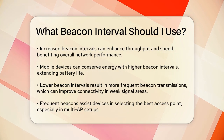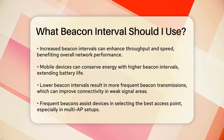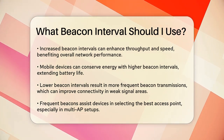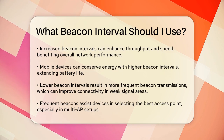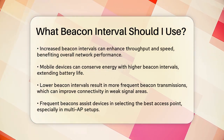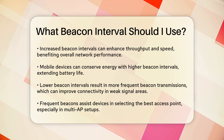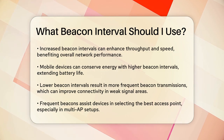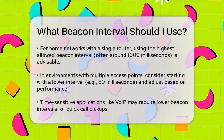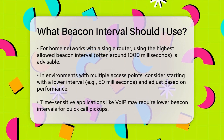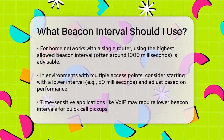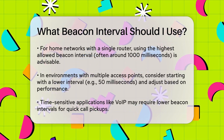Choosing the right interval — so what interval should you use? It depends on your network setup and needs. For basic home networks with a single router or access point, using the highest allowed value is often a good idea. This typically means setting the beacon interval to its maximum allowed value, which can vary by router brand, but is often around 1,000 milliseconds.